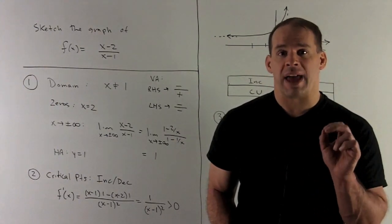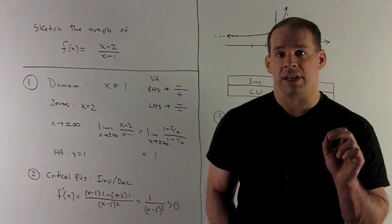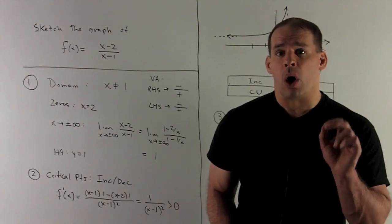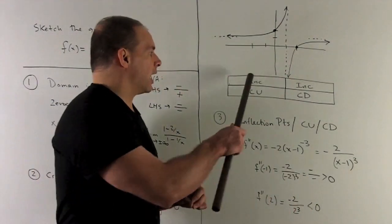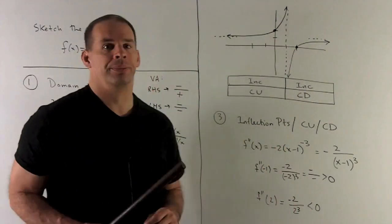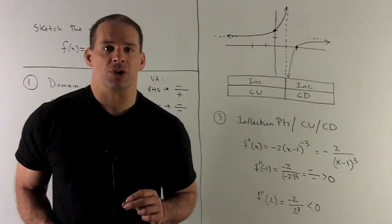So we're always going to have, off of the asymptote, the derivative is positive, so we're always going to be increasing. So I fill my boxes in as so, increasing and increasing. So that's everything I can do with the first derivative.